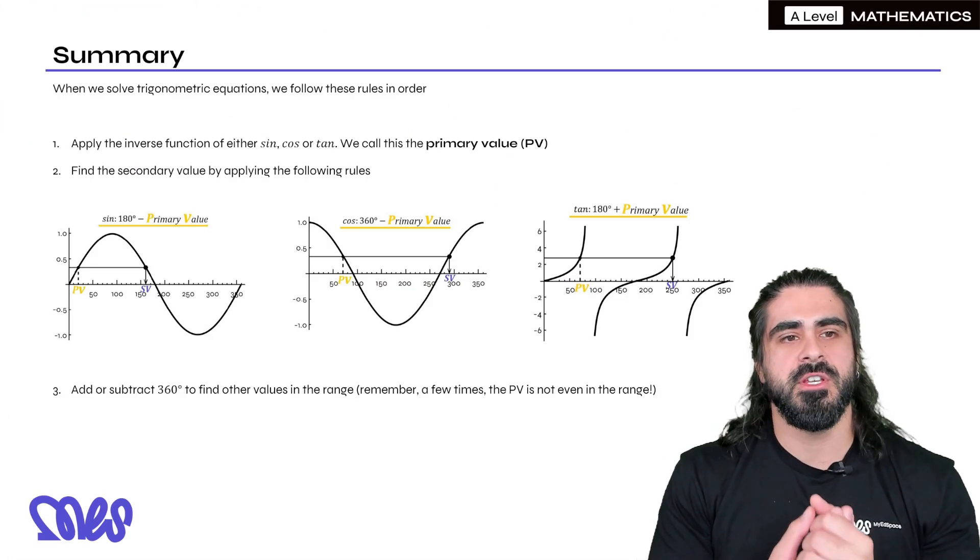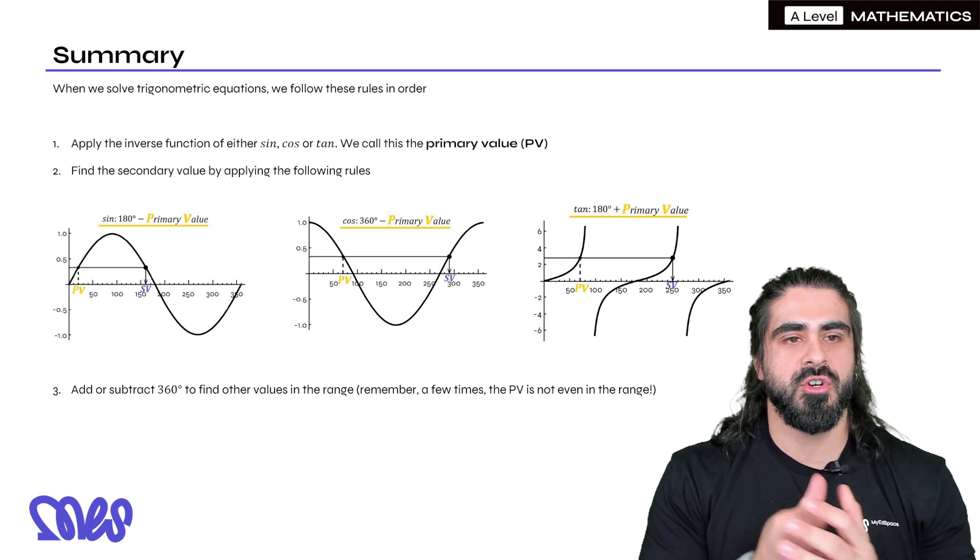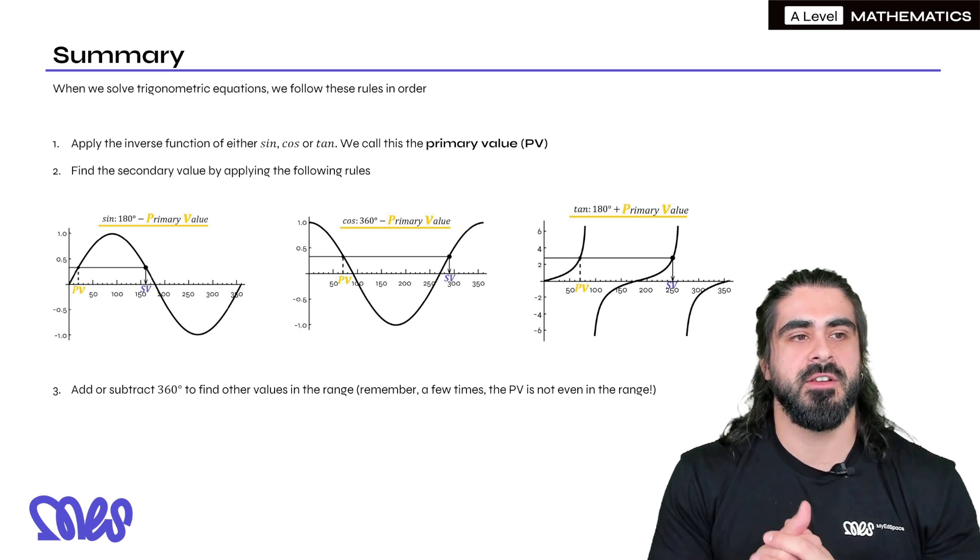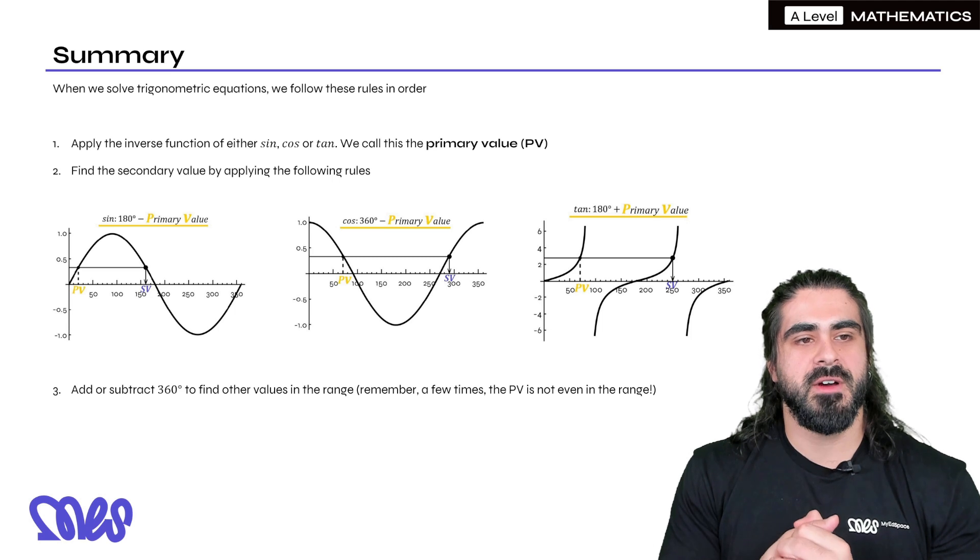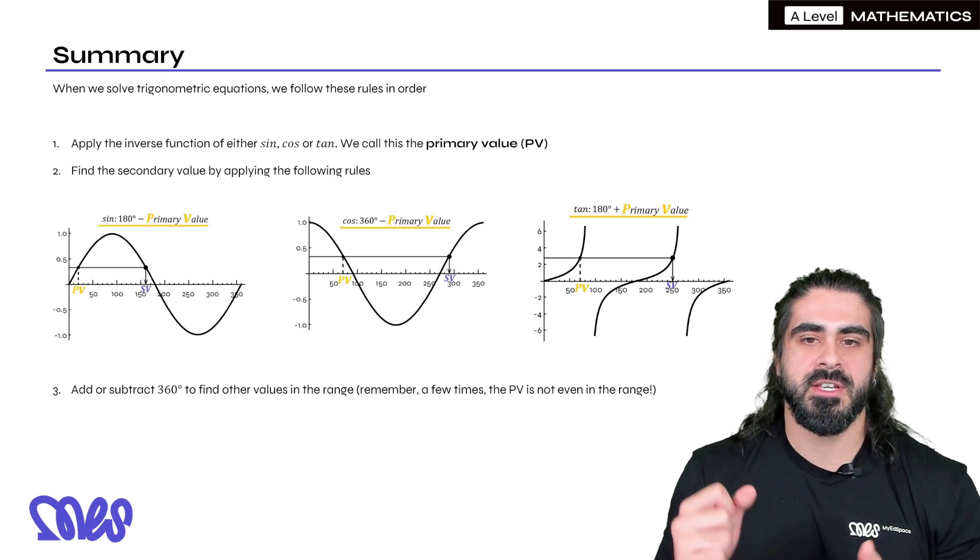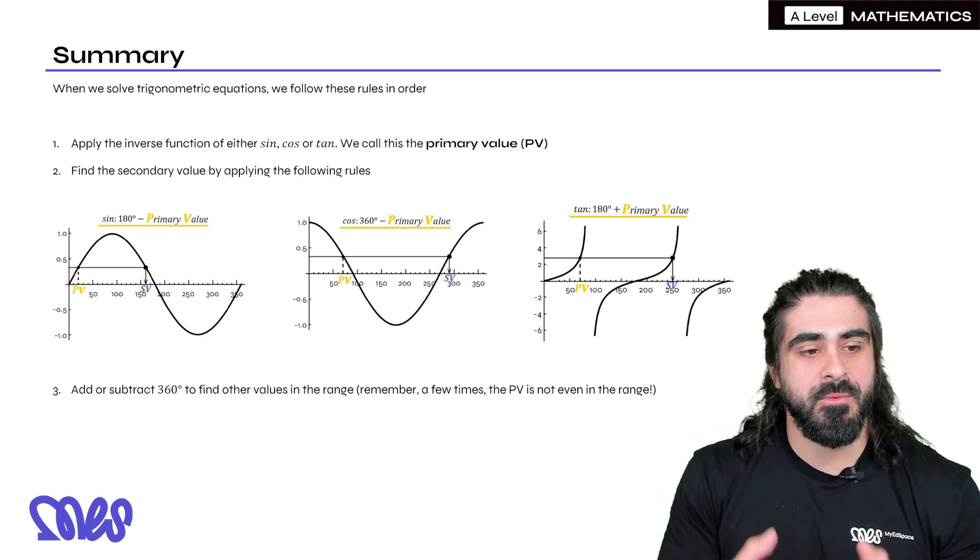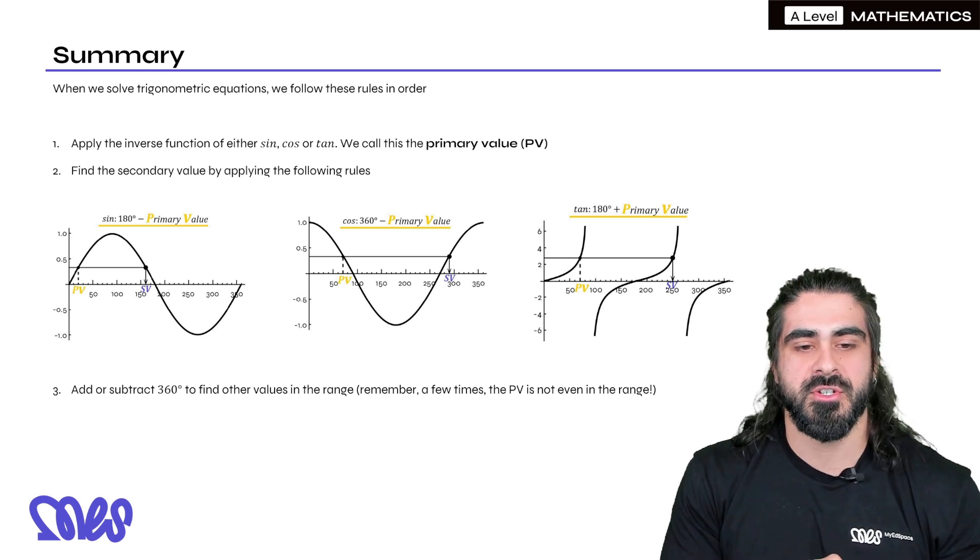So PV SV and minus 360 is very simple. And here's the summary. So when we solve trig, we follow these rules in order. We first apply the inverse function to either sine, cos or tan. We call this the primary value. Then we find the secondary value by applying the following rules. So for sine, 180 minus. For cos, 360 minus. And for tan, 180 plus. And it never changes. Then we add or subtract 360 to find other values in the range.